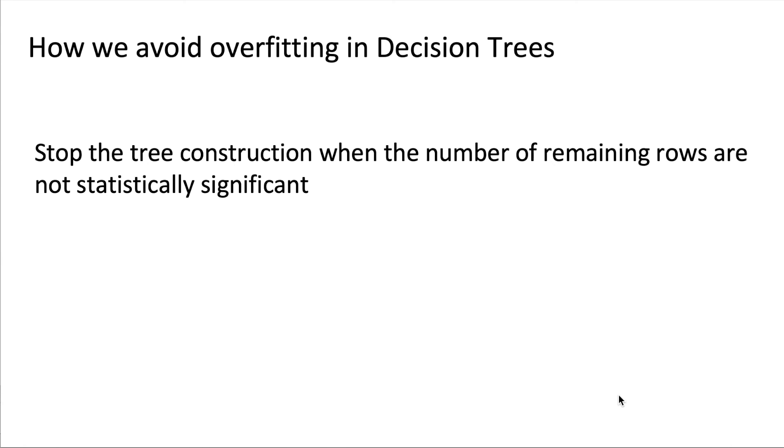So how we can avoid overfitting decision trees? The idea is to stop the tree construction when the number of remaining rows are not statistically significant.